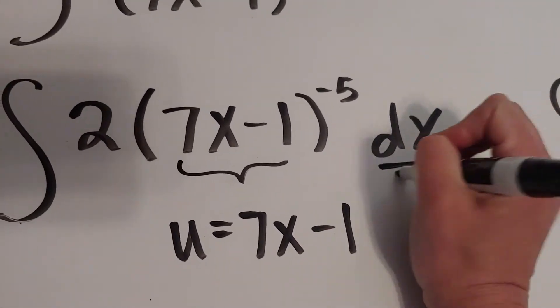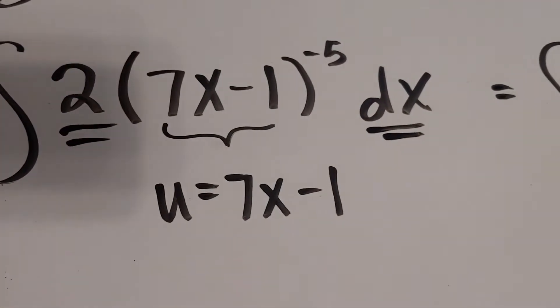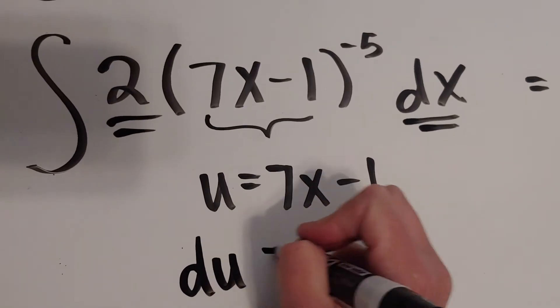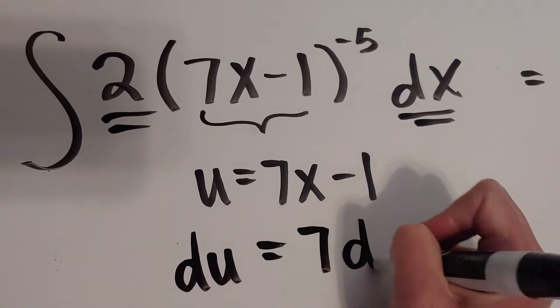Now I still have to make my trade. I still have a 2dx left behind, so let's go down here. du is going to equal 7dx.